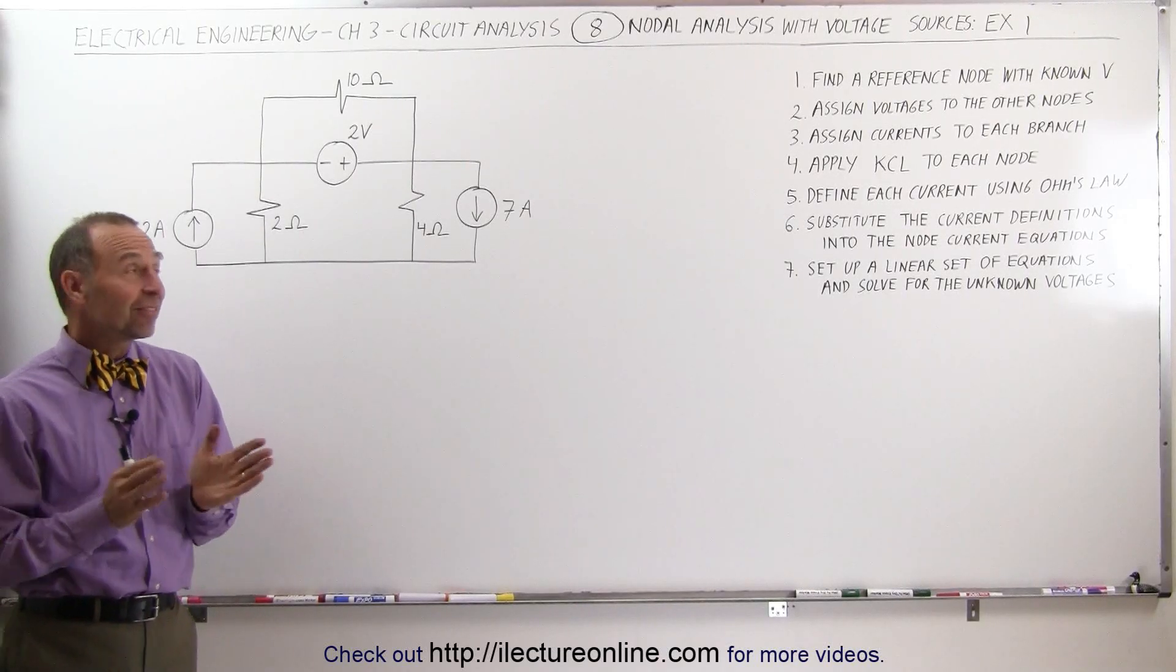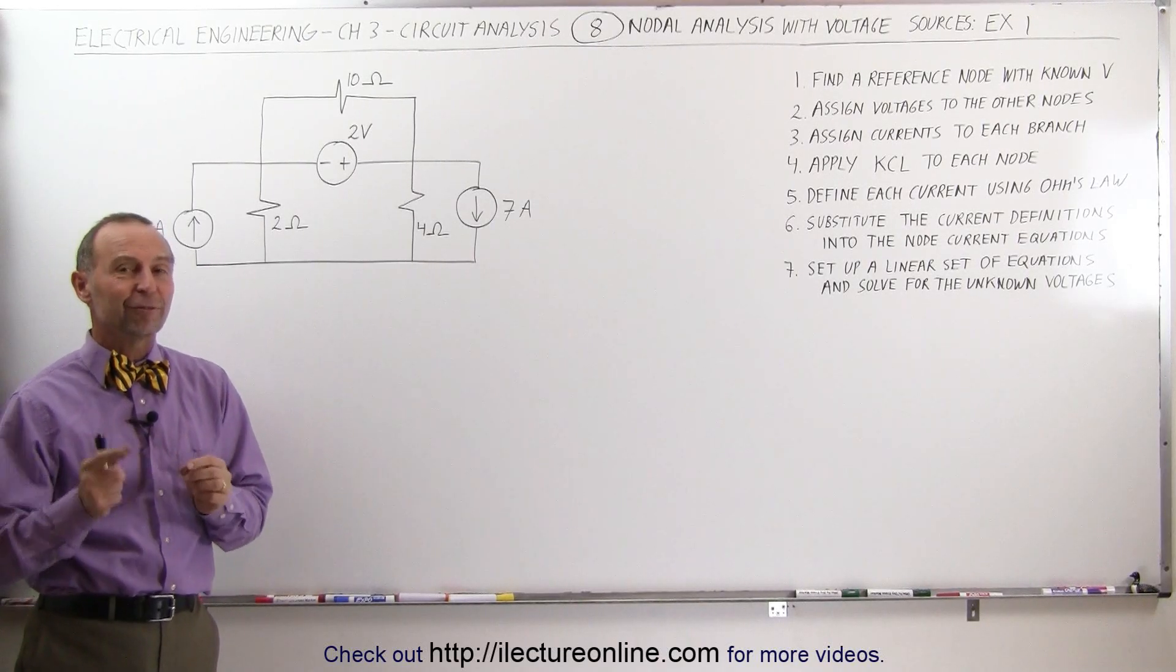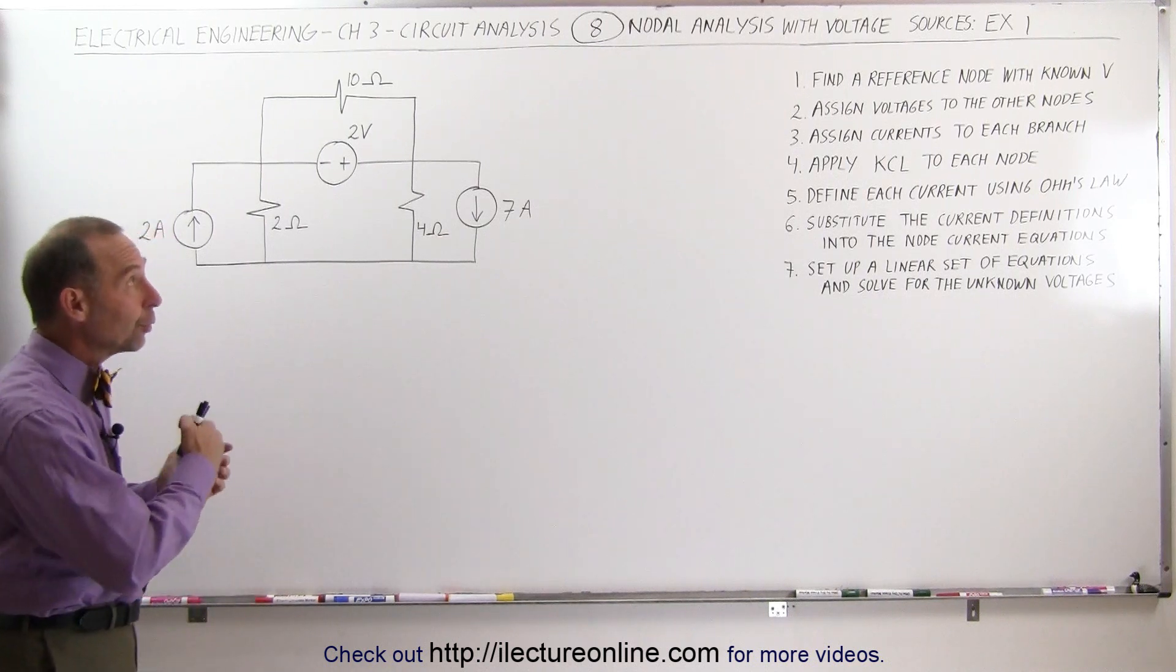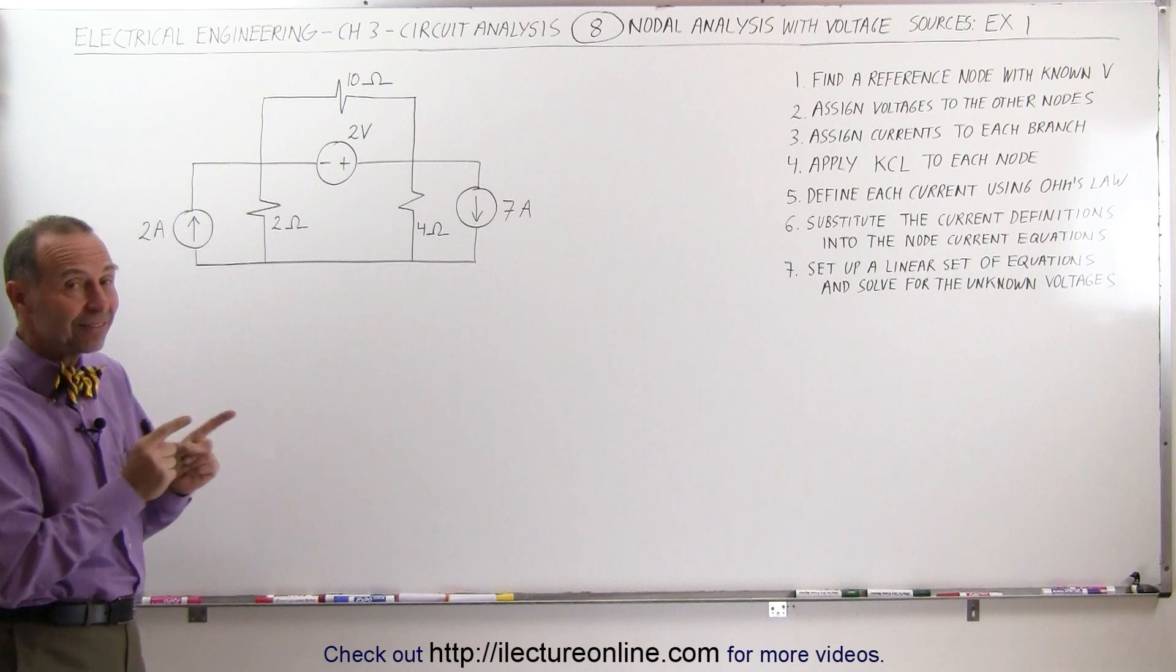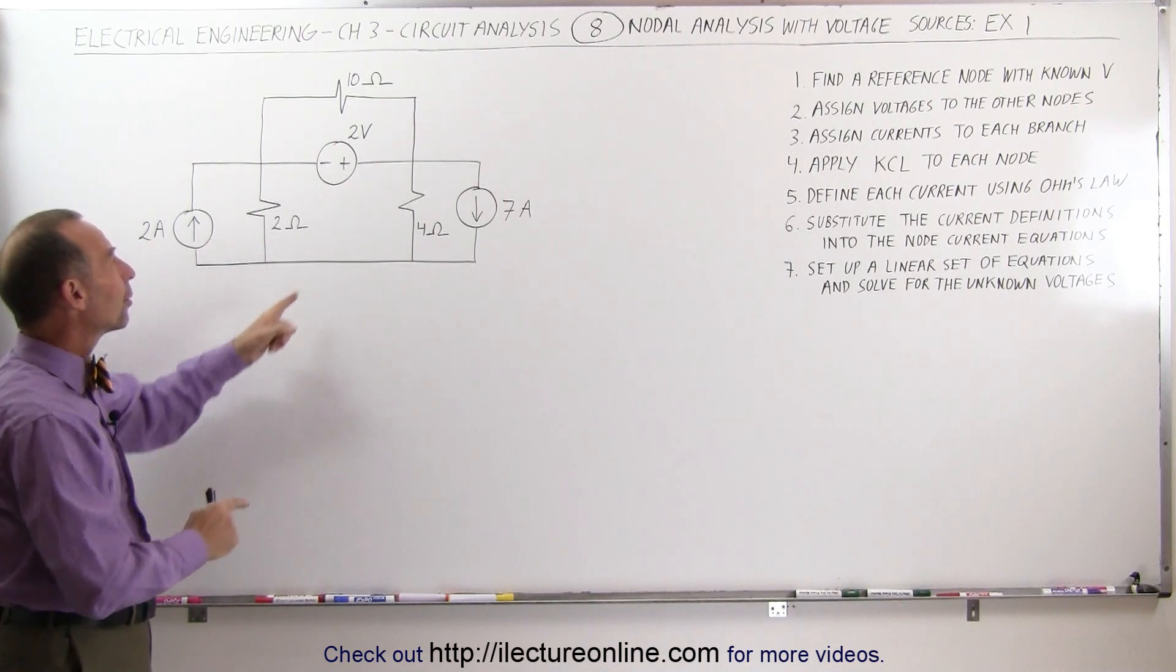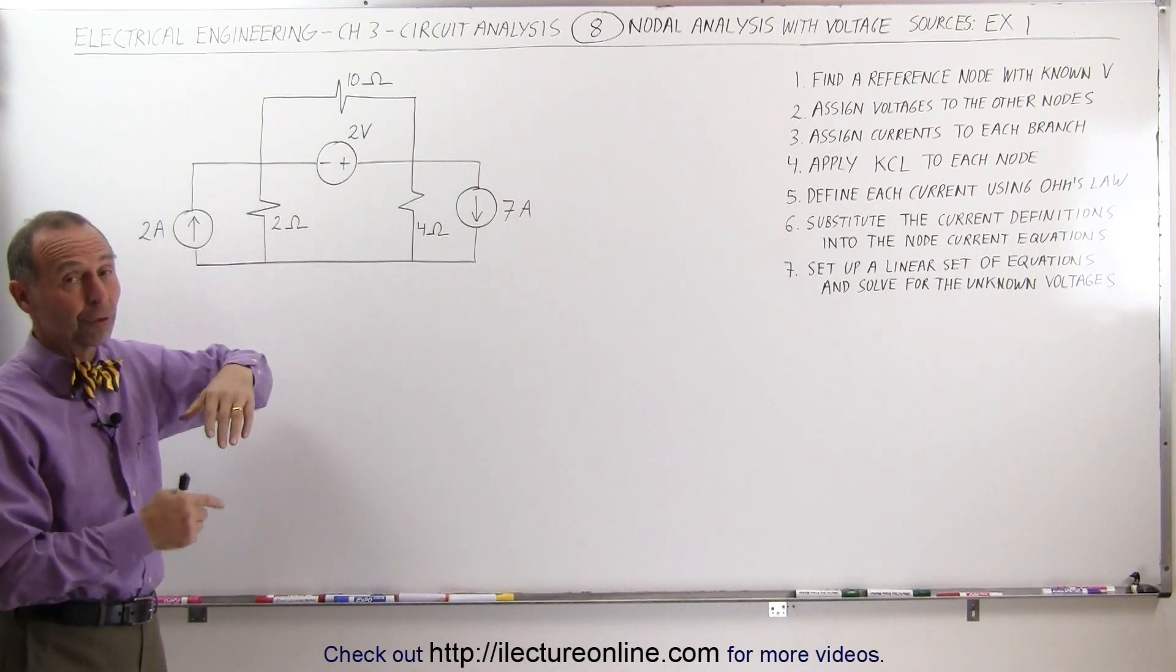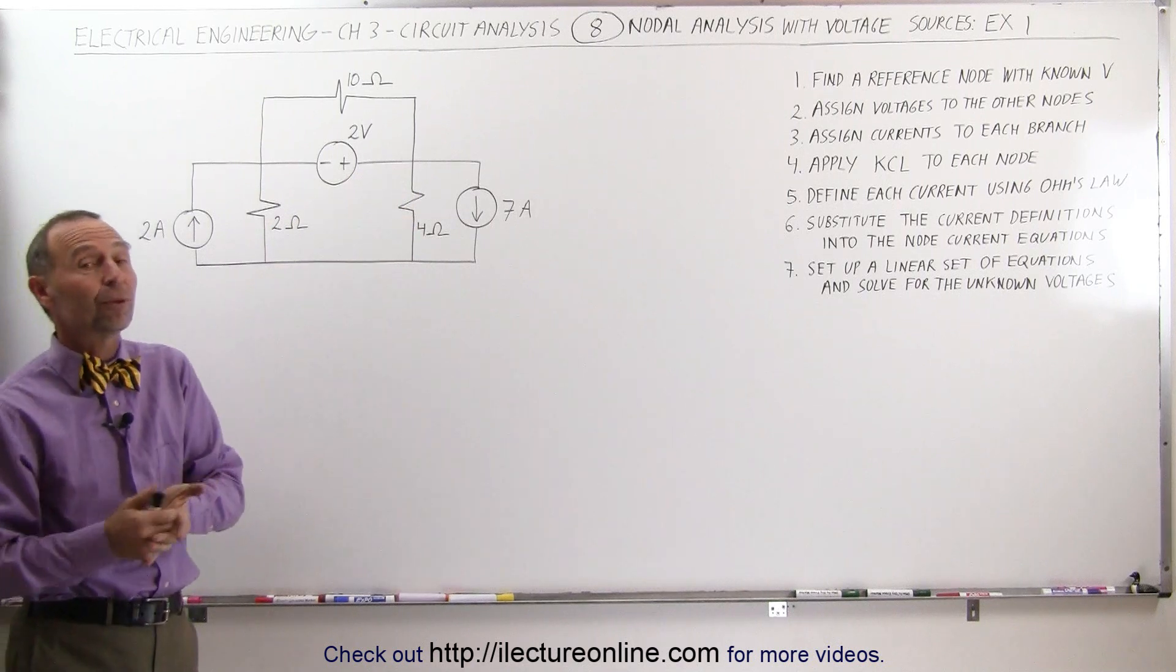Welcome to ElectronLine. In this example, we have something slightly different from before. Remember when we did the node analysis type of examples? We always had current sources, but in this case we have two current sources, but we also have a voltage source. So therefore, the title says, node analysis with a voltage source.